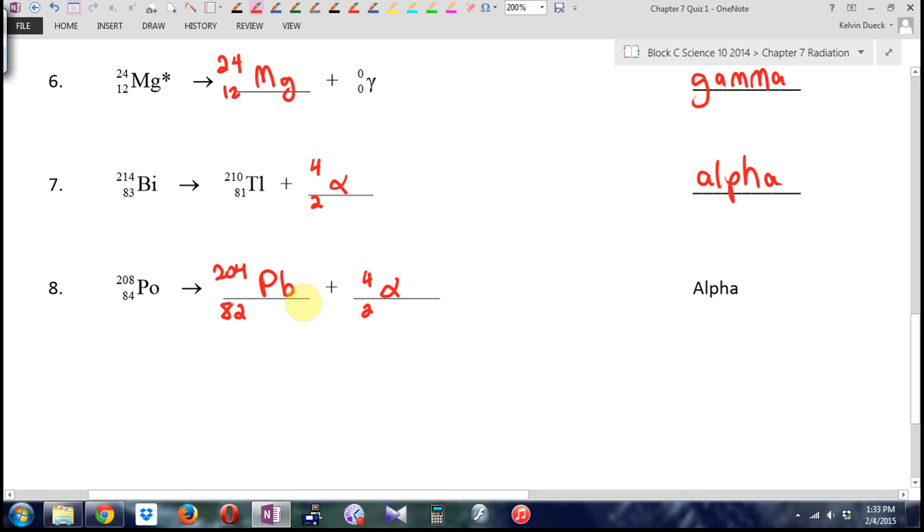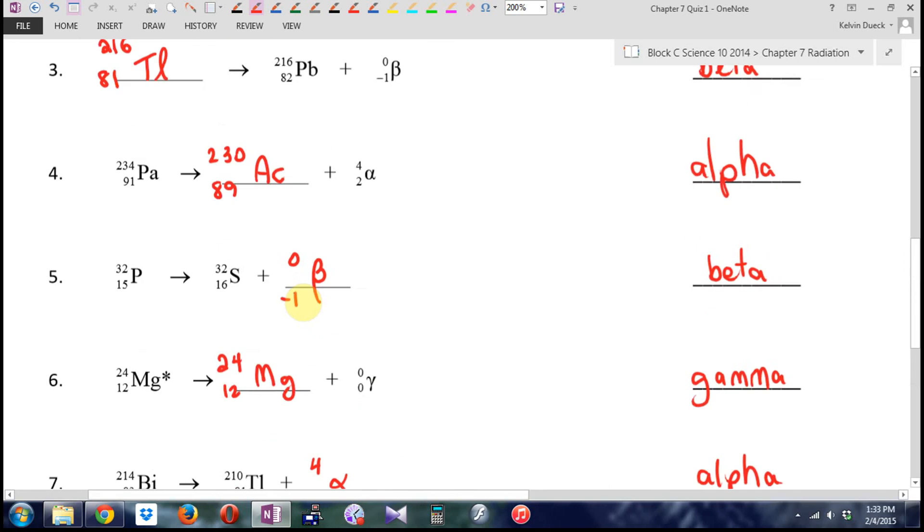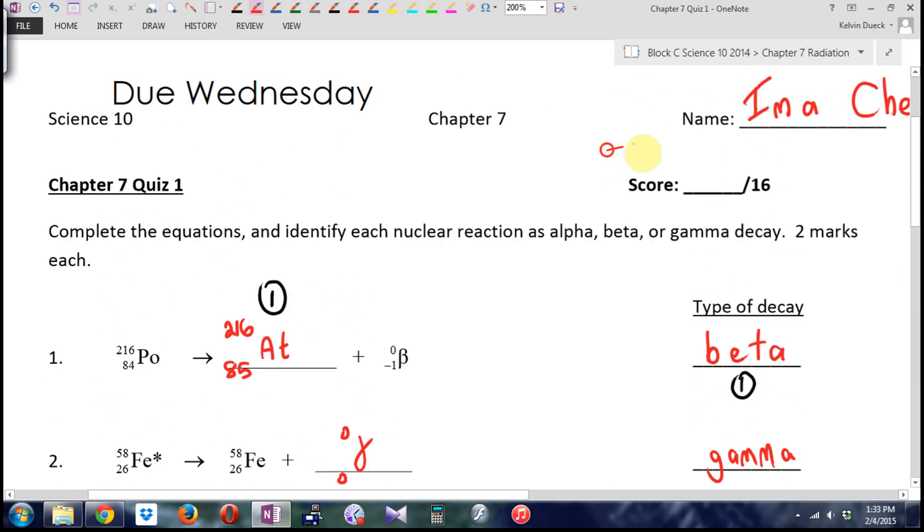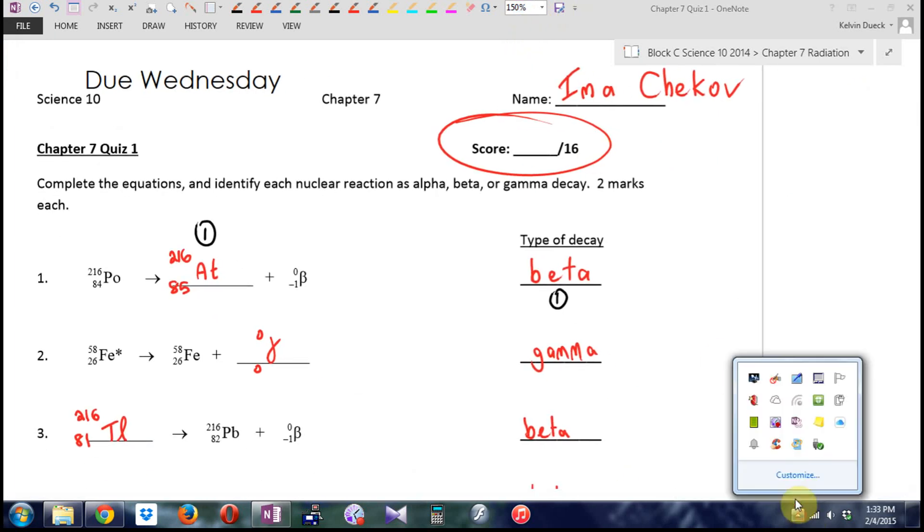Lead 204. So apparently, is PO polonium? So polonium 208 is radioactive and it decays into lead 204 and an alpha particle. Can you give yourself a lovely score out of count them 16 here, please? And then pass them inwards, making sure your name is on them.